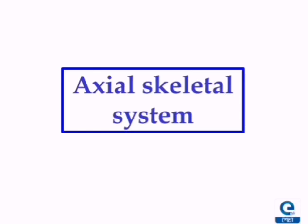Hello students, today we are going to learn about the axial skeletal system. The axial skeletal system is the part of the skeleton that consists of the bones along the axis of the human body. They form the vertical and central axis of the body and include the bones of the head, neck, chest and back. There are about 80 bones in the axial skeletal system.